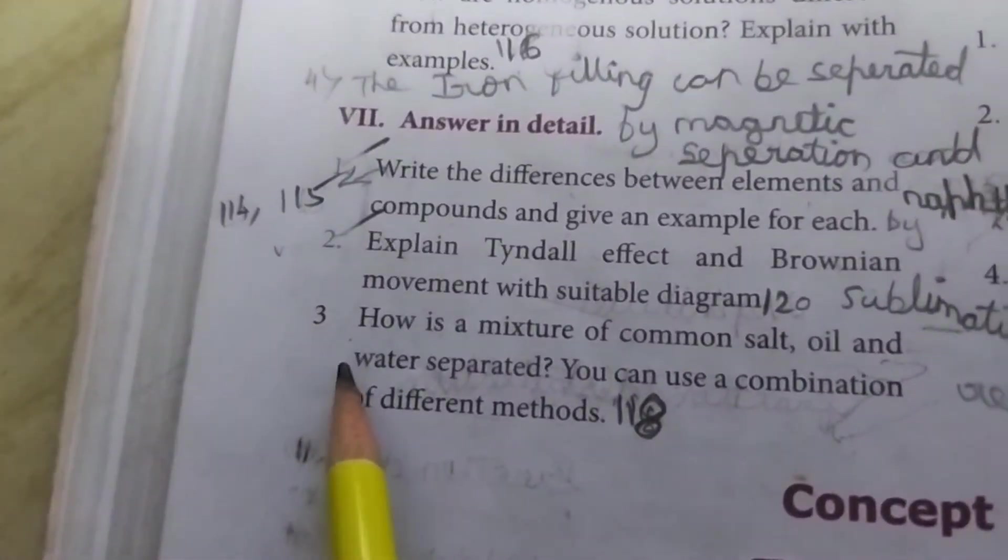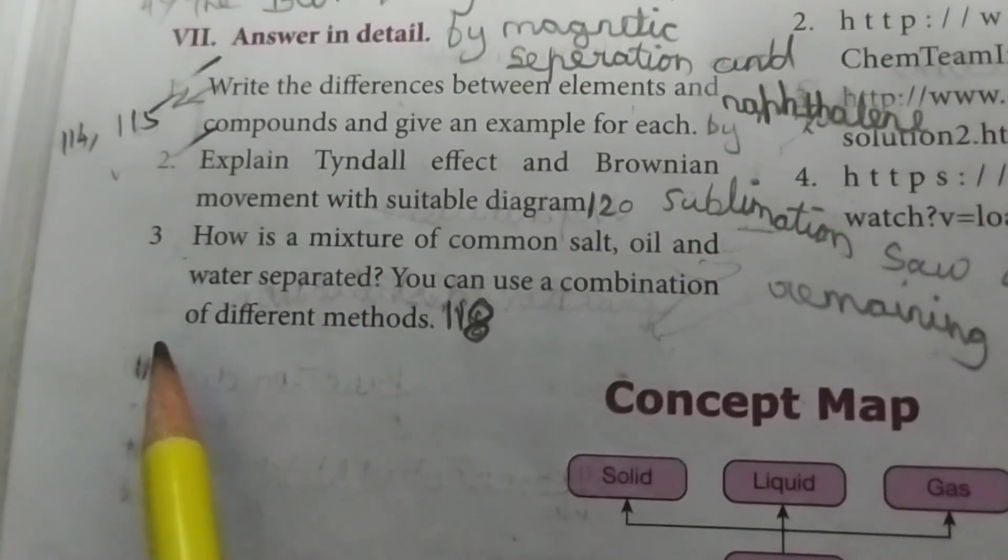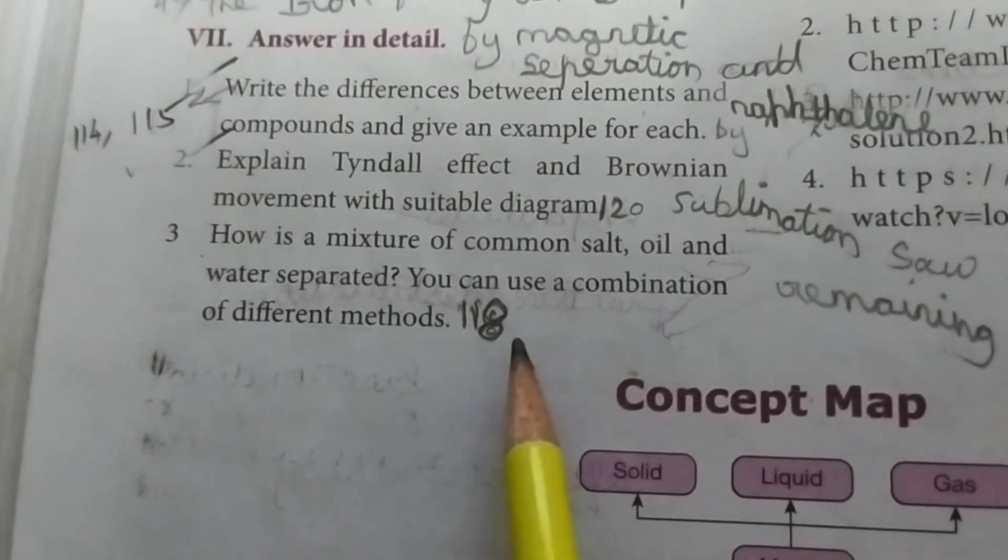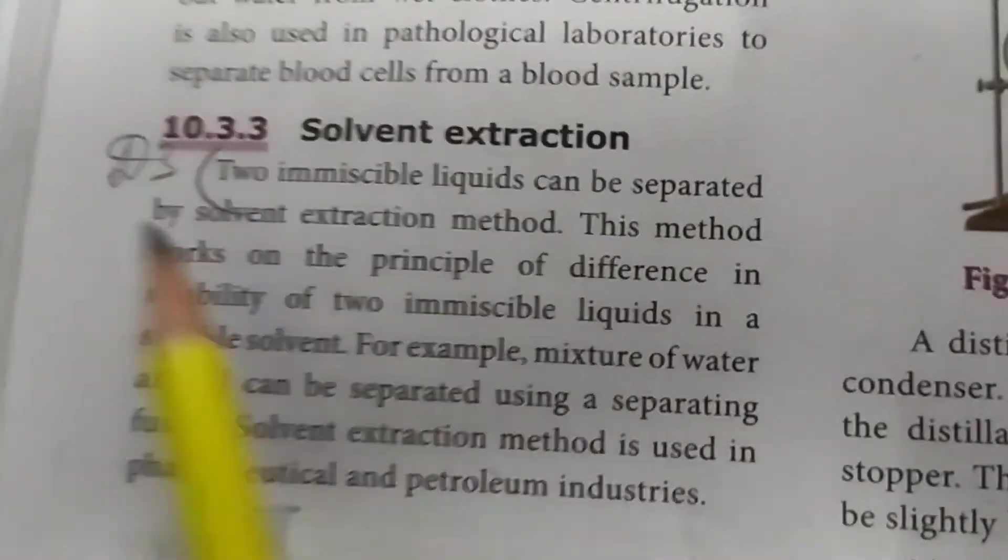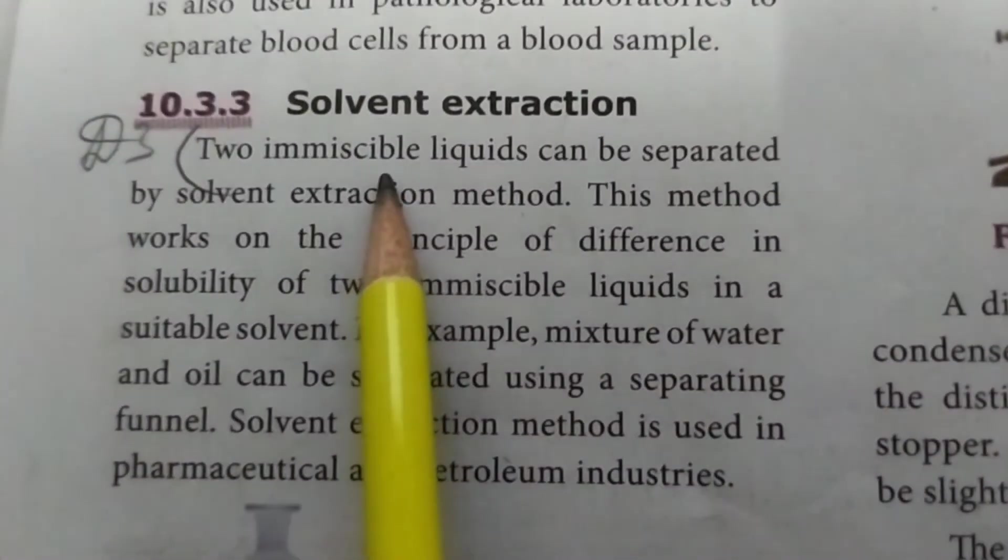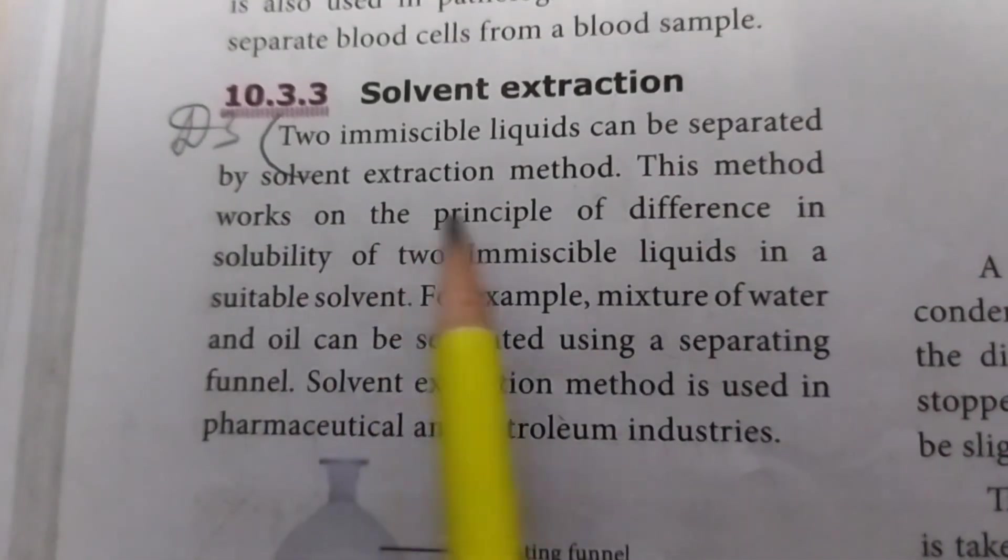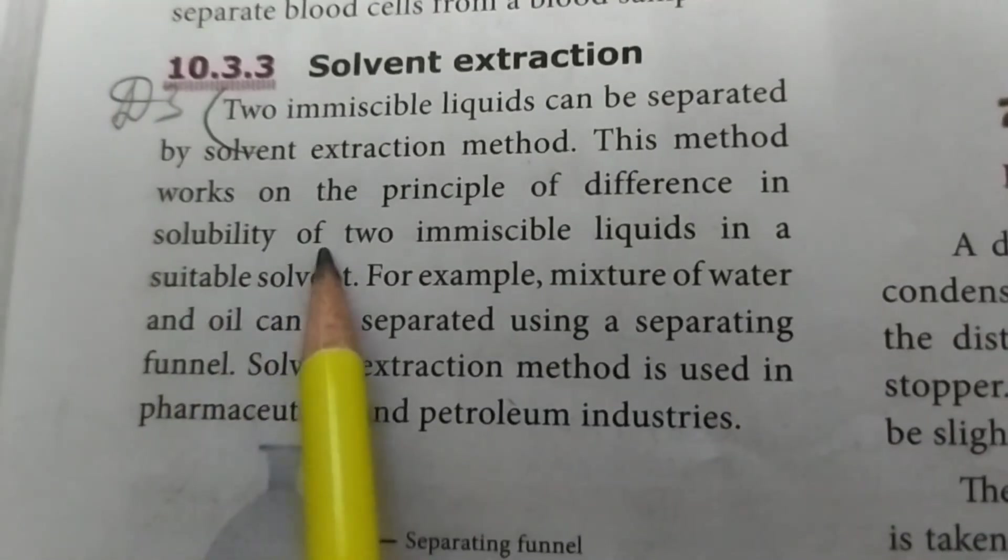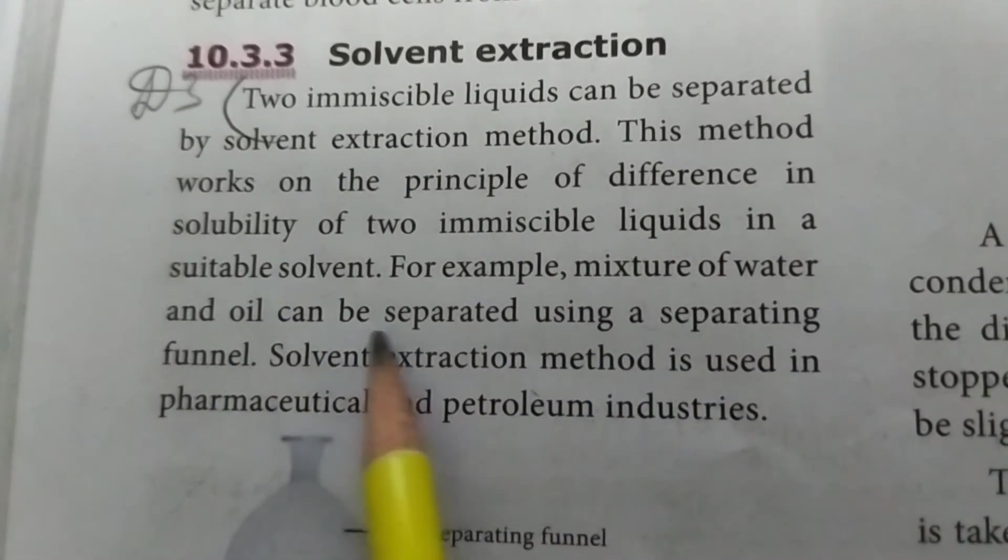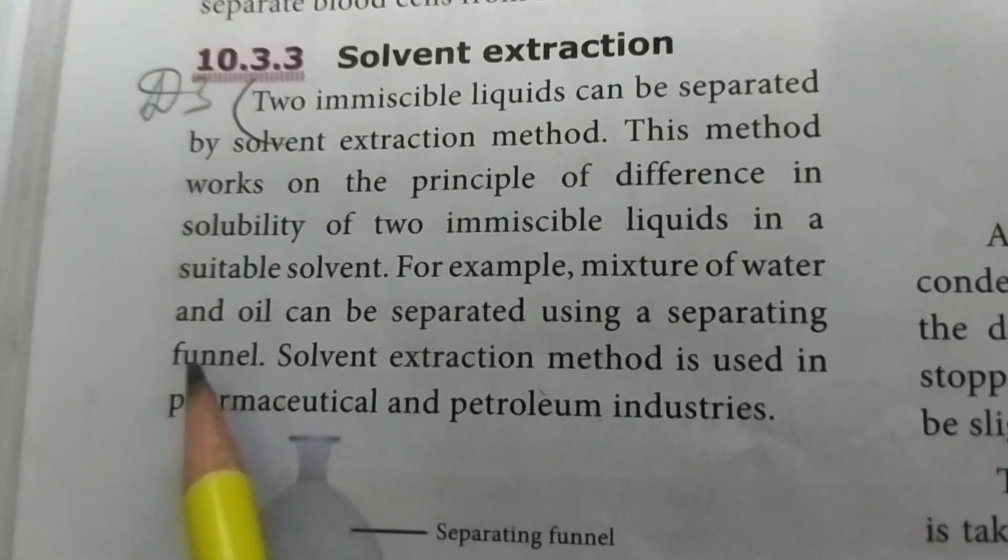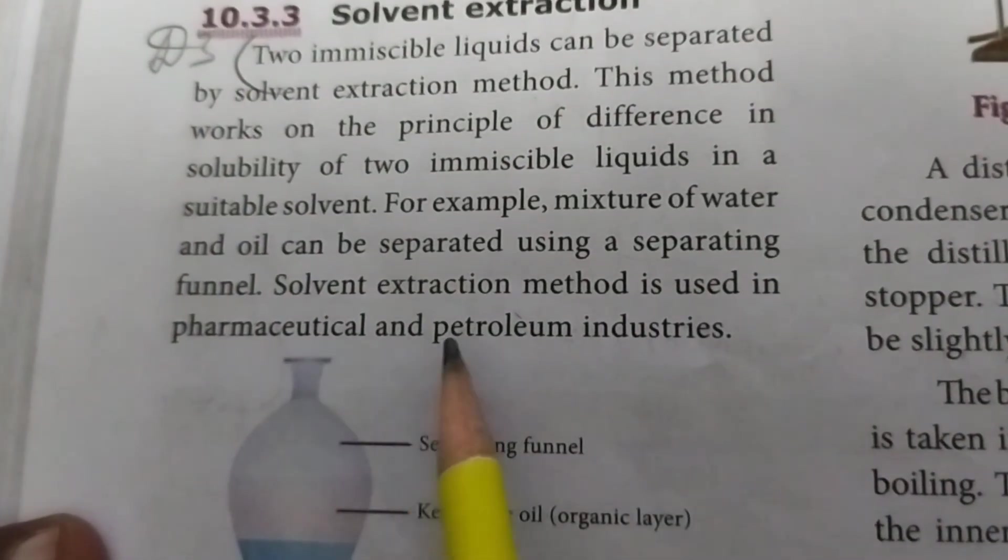Third question: How is the mixture of common salt, oil, and water separated? You can use the combination of different methods. Take page number 118, solvent extraction. Two immiscible liquids can be separated by solvent extraction method. This method works on the principle of difference in solubility of two immiscible liquids in a suitable solvent. For example, mixture of water and oil can be separated using a separating funnel. Solvent extraction method is used in pharmaceutical and petroleum industries.